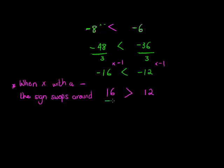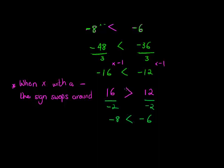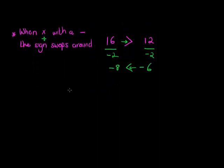Let's see if that's true for dividing as well. Let's divide by negative 2. 16 divided by negative 2 is negative 8, and 12 divided by negative 2 is negative 6. Is it still true that negative 8 is larger than negative 6? No — negative 8 is actually smaller than negative 6. So the sign swaps again. Not just when multiplying, but also when dividing with a negative, the sign swaps around.